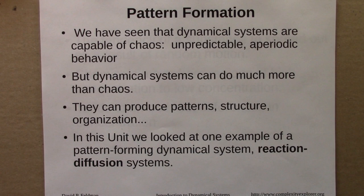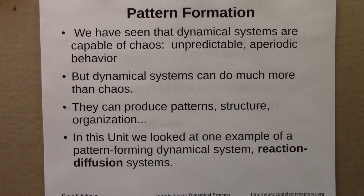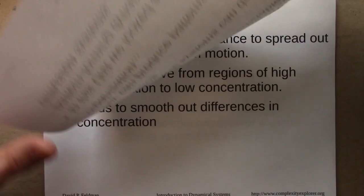I began by pointing out that we've seen that dynamical systems are capable of exhibiting chaos — that's unpredictable, aperiodic behavior, the butterfly effect. But there's a lot more to the story. Dynamical systems can do much more than produce chaos or disorder. They can also produce patterns, structure, organization. In this unit, we looked at one particular example of a pattern-forming dynamical system: a class of systems known as reaction diffusion systems.